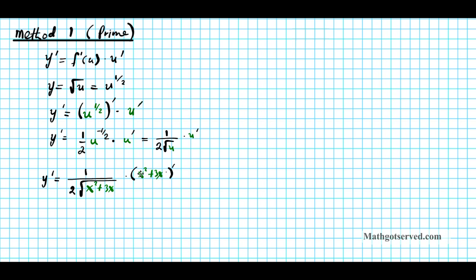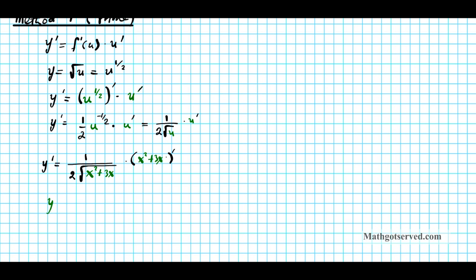We still have to differentiate the inner function — the polynomial. The derivative of x squared plus 3x using the power rule is 2x plus 3. So the final answer is: y prime equals 2x plus 3, all divided by 2 times the square root of x squared plus 3x.